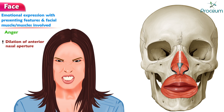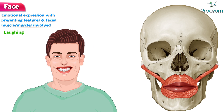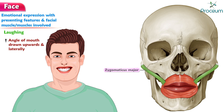Anger: dilation of the anterior nasal aperture and depression of the lower mobile part of the nasal septum — dilator naris and depressor septi. Laughing: angle of the mouth drawn upwards and laterally — zygomaticus major.